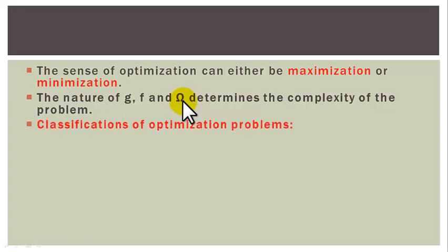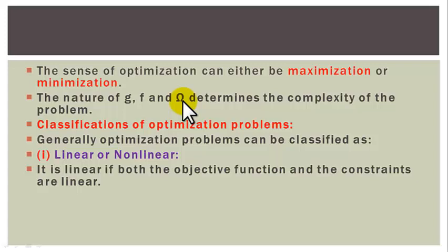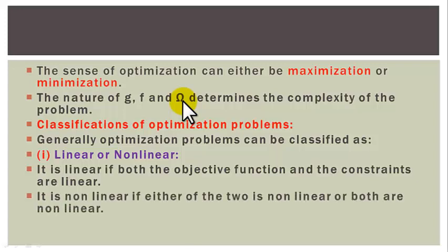Now let us look at classifications of optimization problems. Generally, optimization problems can be classified as follows. One: as linear or nonlinear. It is classified as linear if both the objective function and the constraint are linear, and it is classified as nonlinear if either the objective function or the constraint is nonlinear, or both of them are nonlinear.